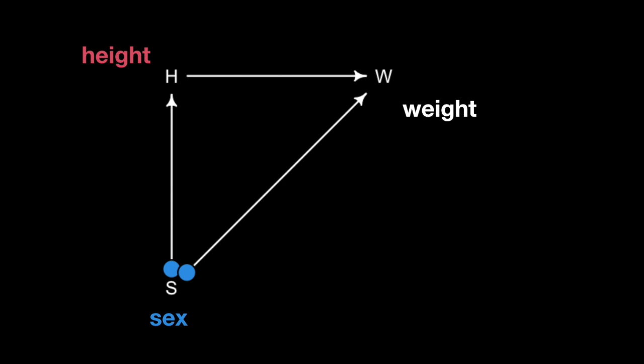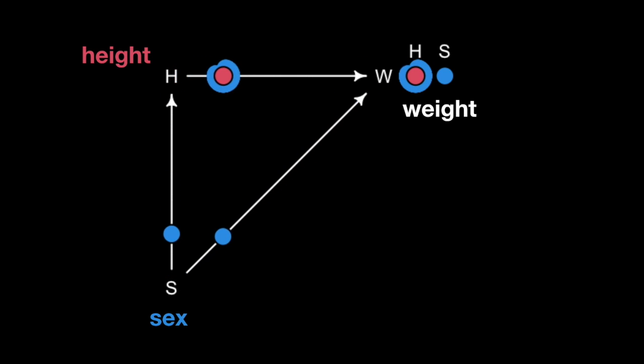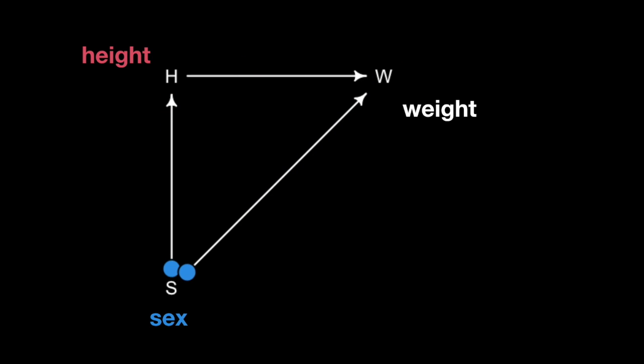To understand indirect causes, imagine little particles of causation moving from sex to both height and weight, and then height exerts its causal influence on weight as well, with those particles in a different color. When the particles arrive at body weight, the sex effect is transmitted in two kinds of bundles — one direct and one packaged through height. The causal effects influencing weight are both direct sex and, indirectly, through height. In a sense, sex and height cooperate to influence weight.